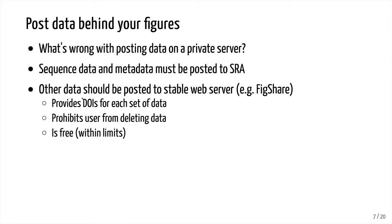Other options for non-sequence data would be to post your data to a stable website. One of the problems with posting to your lab server is that the lab server might move, the address might change, the PI might leave, you might leave. So posting to a stable third party like Figshare is a useful tool for making those data publicly available. The advantage of something like Figshare is that it provides a DOI — a digital object identifier — for each set of data. This is a persistent identifier that has a web address that goes directly to your data set. They also prohibit users from deleting data, so once you put it onto Figshare and make it public, it cannot be deleted. And within limits of file sizes, it's also free.